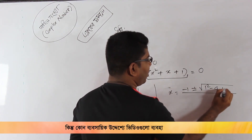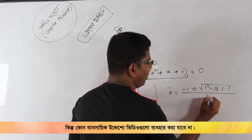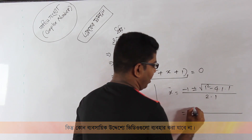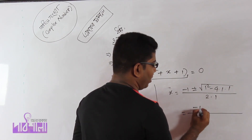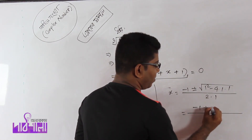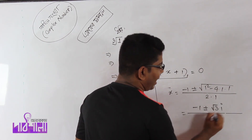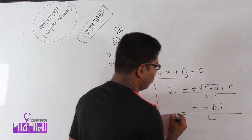1 squared minus 4 into 1 into 1 divided by 2 into 1. Now the result is minus 1 plus minus root 3i divided by 2.